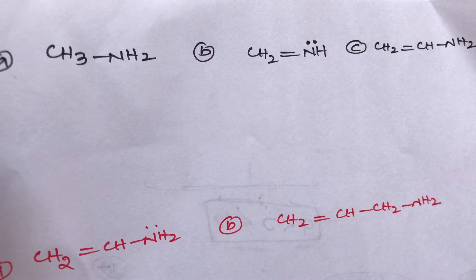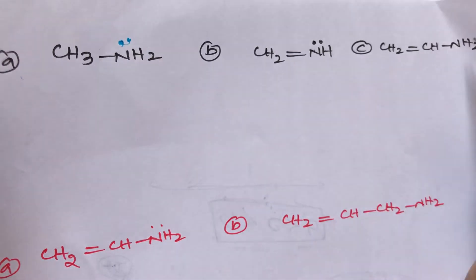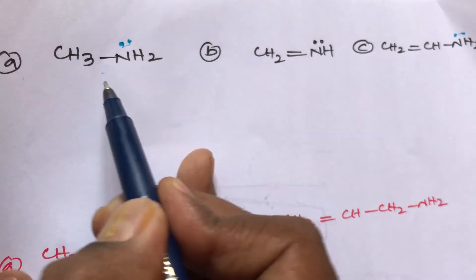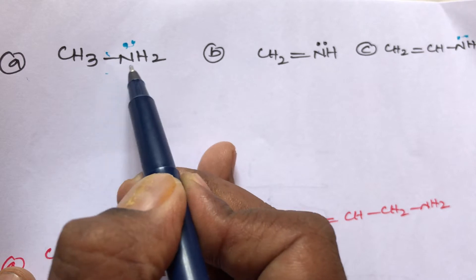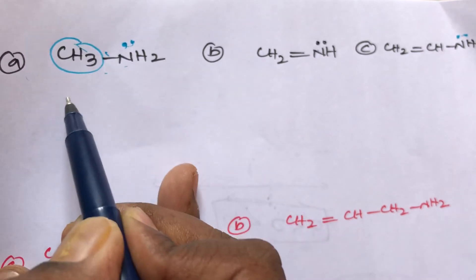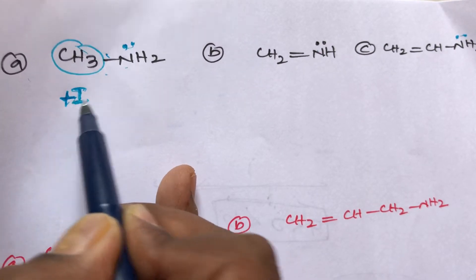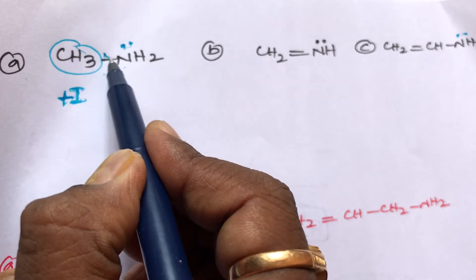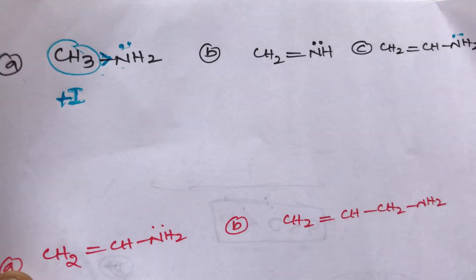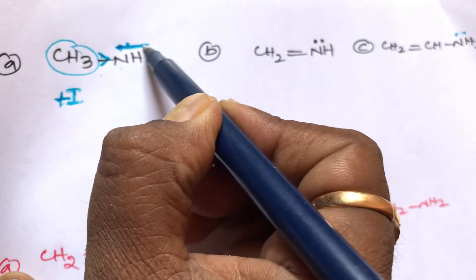Hello students, find out the basic strength order of the following compounds. The first compound has NH2 beside it — all are having lone pairs. This is a primary amine. The NH2 group has a CH3 group beside it. The role of CH3 group is that it belongs to the +I (positive inductive) group. This +I group is always electron-releasing or electron-donating, so the electron density slightly increases on nitrogen.